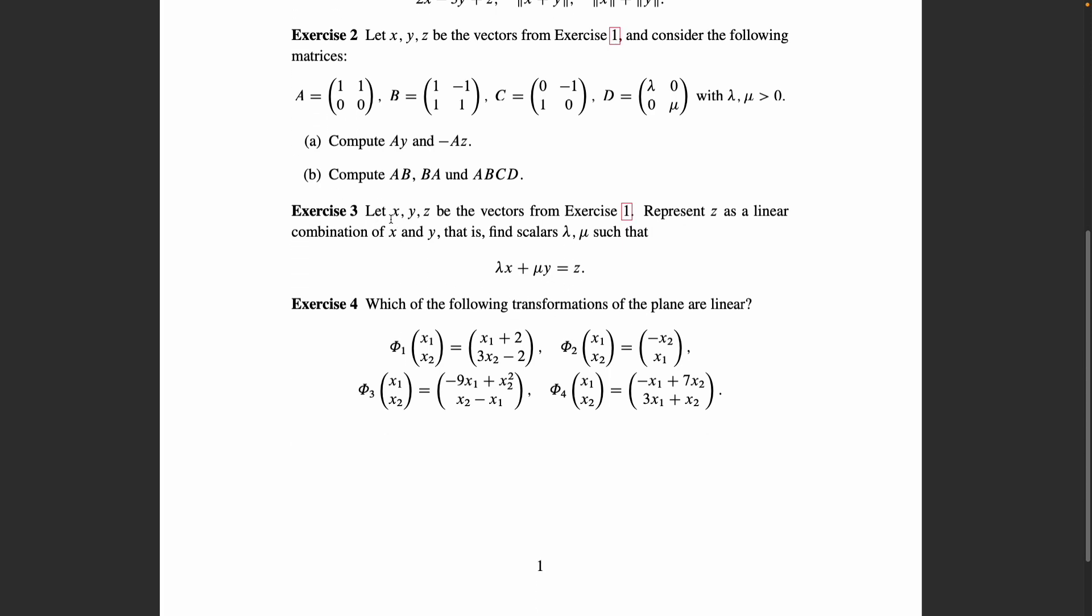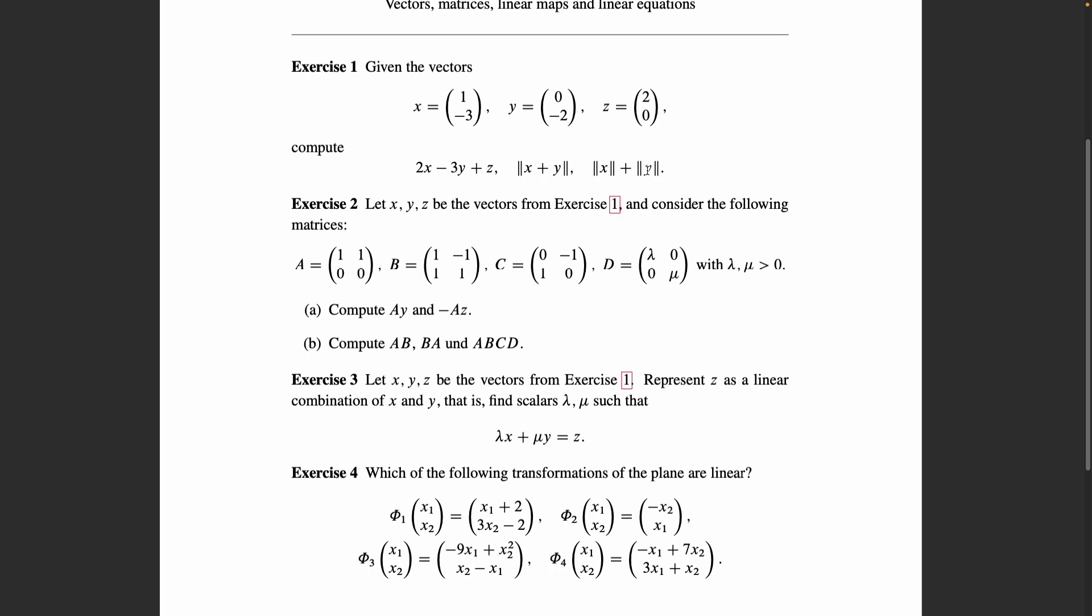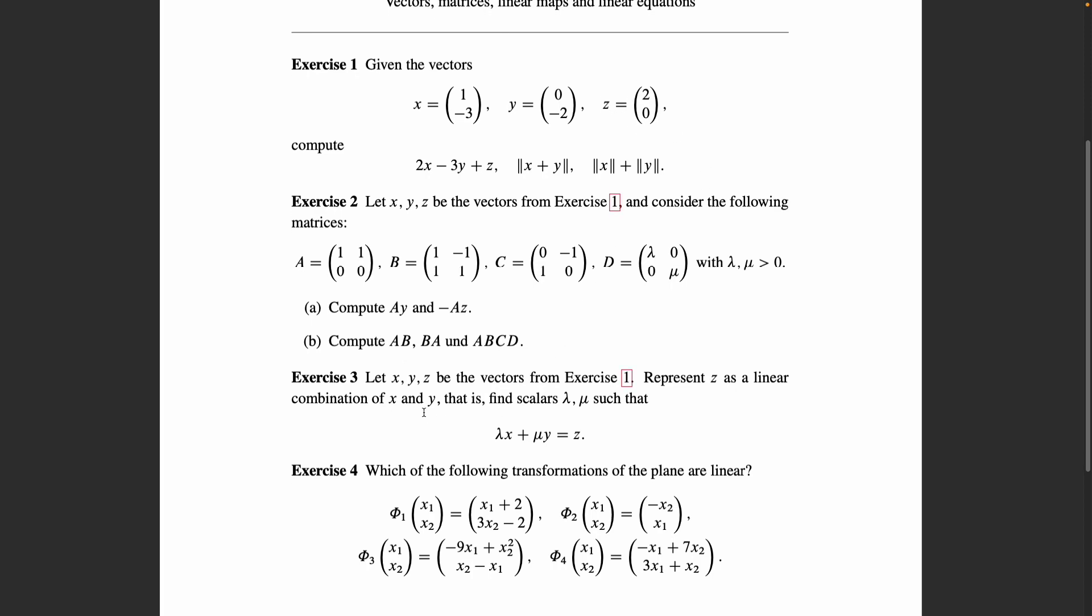Again, x, y and z from the first exercise. Now the task is to represent the third vector z as a linear combination of x and y. So write vector z as a linear combination of these two here. That is find scalars such that lambda times x plus mu times y equals z.